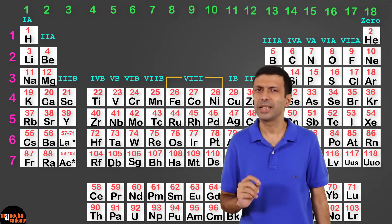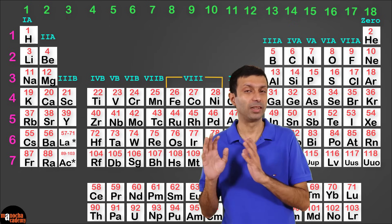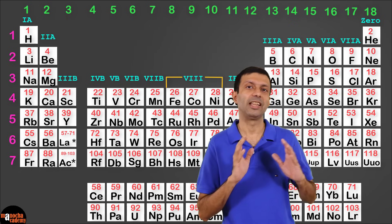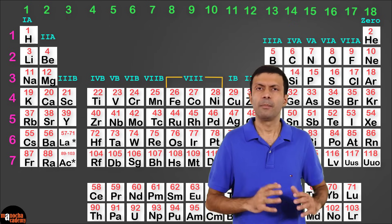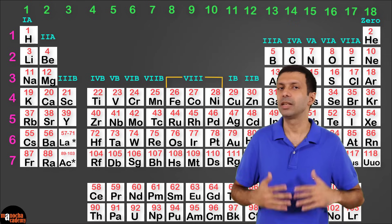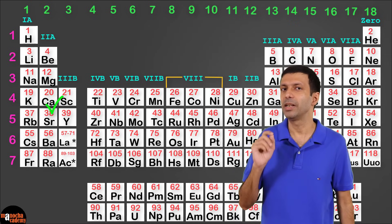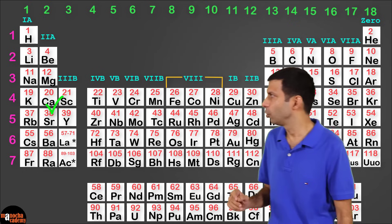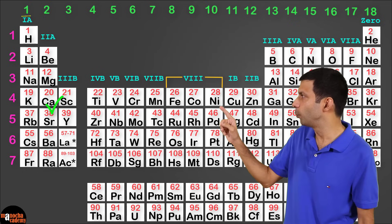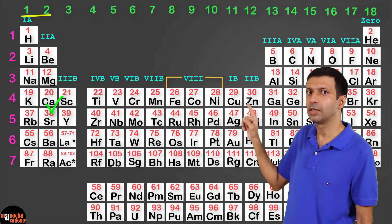Now I can teach you an easy trick to remember the mapping between the new and the old scheme. Basically, you have till calcium in your syllabus, element number 20. So you have group 1, group 2, and then groups 13, 14, 15, 16, 17 and 18 in your syllabus.